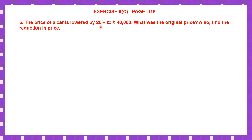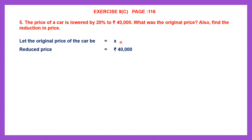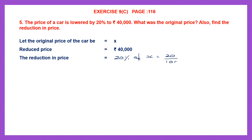Reduction in price is given to us as 20% of the original. So let the original price of the car be x. This is the original price and this is the reduced price. In the beginning it was x, after the price was lowered the reduced price is 40,000 rupees. The reduction in price is 20% of x. So this will be 20 by 100 into x. Now let's cancel — I can cancel the zeros, I can cancel 2 and 10.